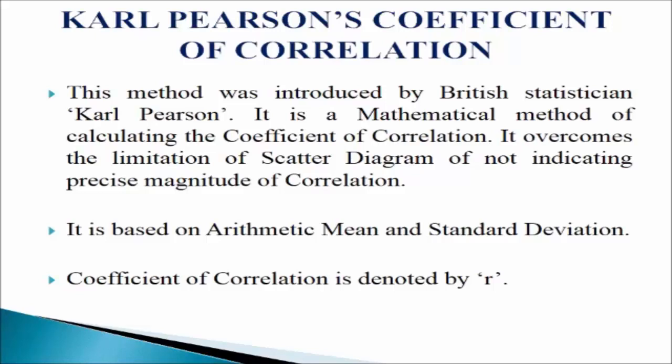It overcomes the limitation of the scatter diagram of not indicating precise magnitude of correlation. Karl Pearson's coefficient of correlation is also known as product moment correlation or simple correlation coefficient. It is the most popular and widely used method to calculate the correlation coefficient. It is based on arithmetic mean and standard deviation. The coefficient of correlation is denoted by r, and r is a pure number — it has no unit.